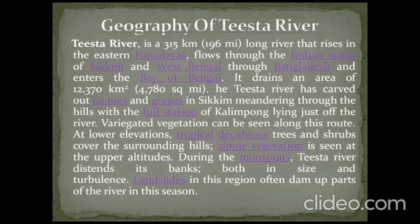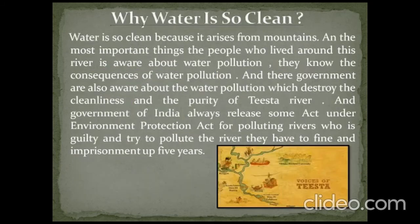Varied vegetation can be seen along this route. At lower elevations, tropical deciduous trees and shrubs cover the surrounding hills, while alpine vegetation is seen at upper altitudes. During the monsoons, the Teesta River overflows its banks, increasing in size and turbulence, and landslides in this region often dam up parts of the river. The Teesta is a 315-kilometer long river flowing through Sikkim and West Bengal into Bangladesh and the Bay of Bengal.